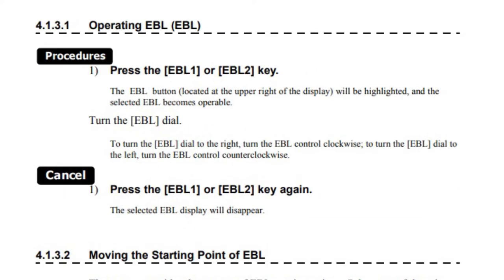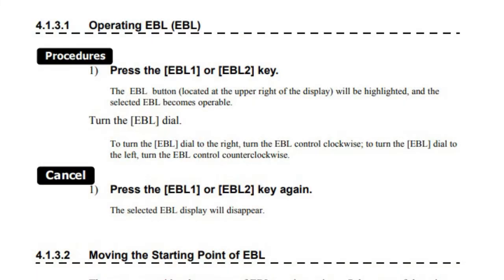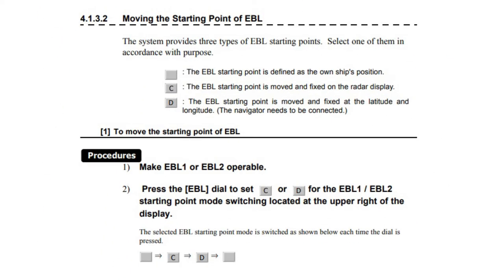Press the EBL 1 or EBL 2 key. The EBL button located at the upper right of the display will be highlighted and the selected EBL becomes operable. Turn the EBL dial to the right to increase, or counterclockwise to decrease. Press the EBL 1 or EBL 2 key again and the selected EBL display will disappear.